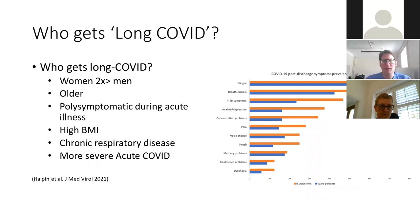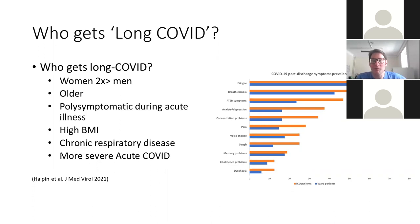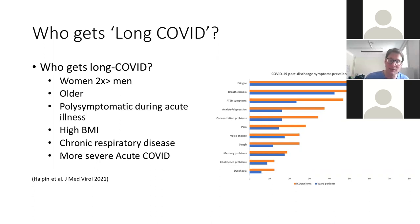Who gets Long COVID? It is more common in women — about twice as common — more common in older people, in people with more symptoms during their acute illness, in overweight people, and in those with chronic respiratory disease. If your acute COVID was worse, you're more likely to get Long COVID symptoms. The graph shows Long COVID symptoms are much more prevalent in those who needed intensive care versus those admitted to the general ward, though even people with mild symptoms can get significant Long COVID.